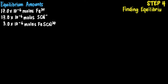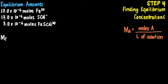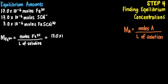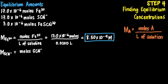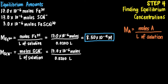For Step 4, we determine the concentrations of our reactants at equilibrium using the molarity formula. For iron-3-ion: 17×10⁻⁶ moles divided by 0.0200 liter gives 8.5×10⁻⁴ molar. For thiocyanate ion: 17×10⁻⁶ moles divided by 0.0200 liter also gives 8.5×10⁻⁴ molar.